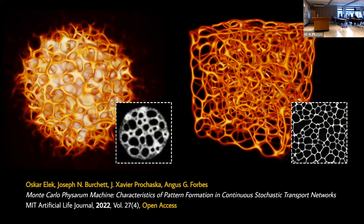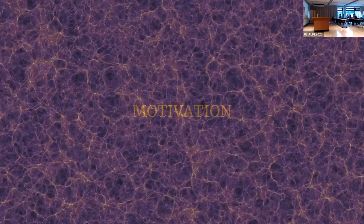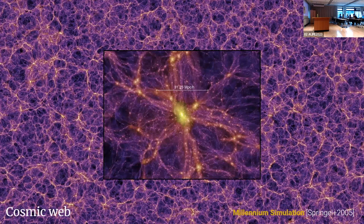Let me start with a motivation — why we really wanted to design a three-dimensional slime mold, besides it being hopefully cool. This here is the cosmic web, and it is literally the biggest structure that we know of in the universe. When you zoom in onto the structure, you see individual galaxies as tiny bright dots. Somewhere in there is our galaxy, presumably — although this is a simulation, but you can think of it that way. And if you zoom out, you see the whole universe. That's the scale we are operating on.